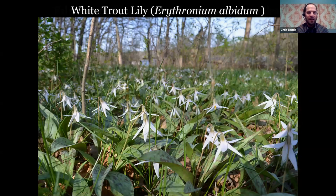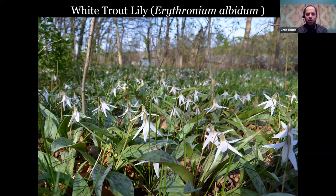White trout lily — I took this photo at Maple Lake Cook County forest preserve. In the northern part of the state, white trout lilies are much more common than yellow, and down in the southern part it's the other way around. We do have a third species, Erythronium mesochorium, the prairie trout lily, which also has white flowers. They have mottled leaves that resemble a brook trout — that's where the name comes from. Trout lilies remain in the lily family, Liliaceae, even though the lily family has been broken up into various families.